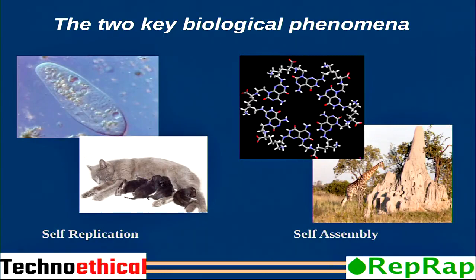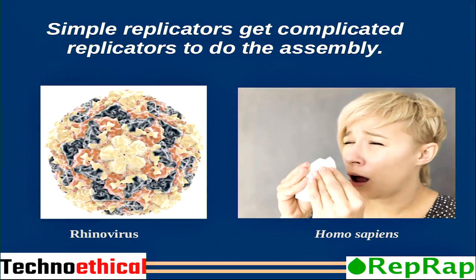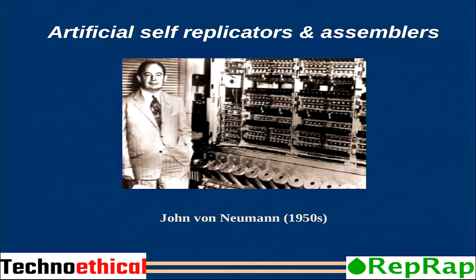There are two key biological phenomena: self-replication, like kittens that are born from their mother, and self-assembling — where a simple replicator gets a more complicated replicator to do the assembly, like a rhinovirus does using us, homo sapiens, to replicate. This is an example of a machine, like done by John von Neumann.